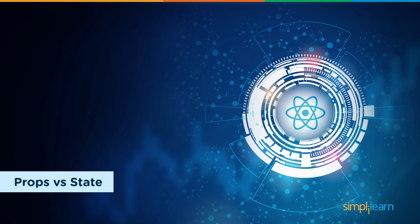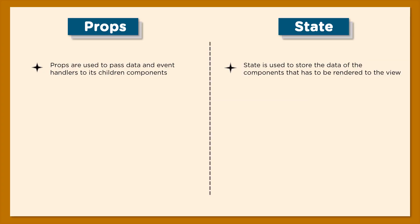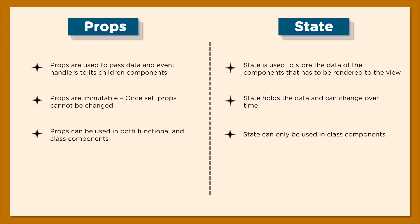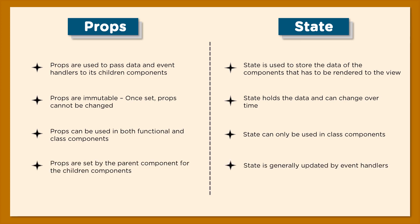Props and state both dictate and control the behavior of a component, but they have significant differences. Props are used to pass data and event handlers to children, while state stores data to be rendered on the web page. Props are immutable — once set by the parent they cannot be changed — while state holds volatile data that can change over time. Props work in both functional and class components, while state is restricted to class components. Props are set by the parent, while state is updated by event handlers.